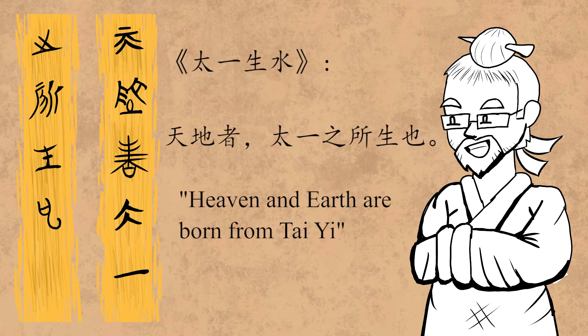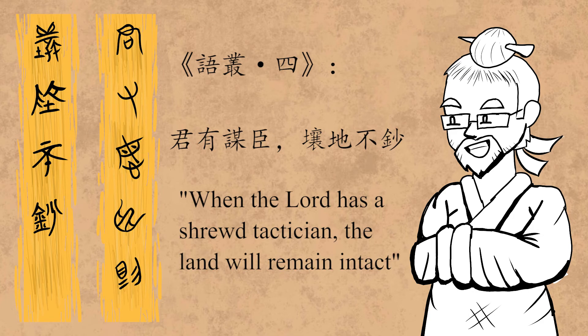In the 太一生水, we read 天地者，太一之所生也 — heaven and earth are born from 太一. 太一, or the Great One, is often identified as the Tao. And in the 语丛, we read the lines 君有某谋，郎地不超 — when the lord has a shrewd tactician, the land will remain intact.